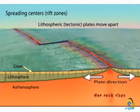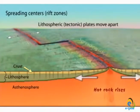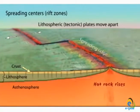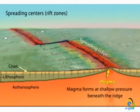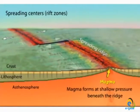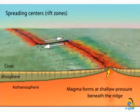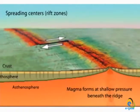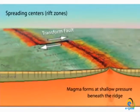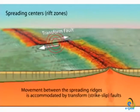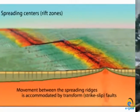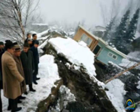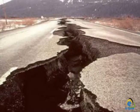Not all earthquakes happen along plate boundaries under the sea — some happen in the middle of the continent, and therefore not all earthquakes produce tsunamis. Sometimes there are boundaries deep underground, and sometimes there are ancient fault zones deep in the earth's crust, which become buried under many layers of sediments and rock.